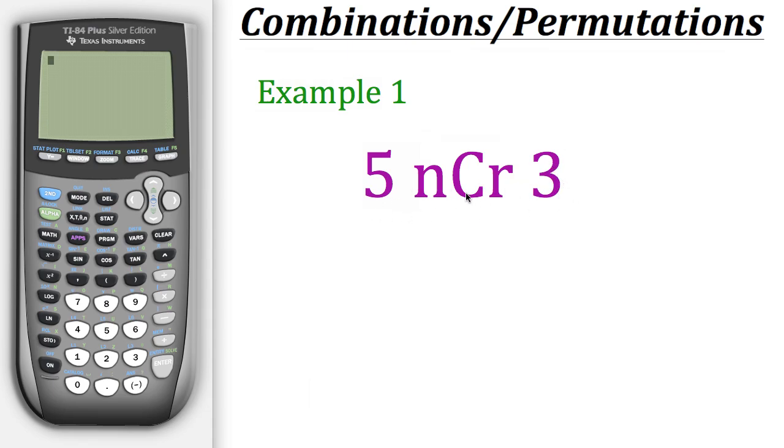So when we put this into the calculator we'll first put in five and then we'll go over to math and then we'll go to the probability tab and then the third option is our combination notation, the nCr.